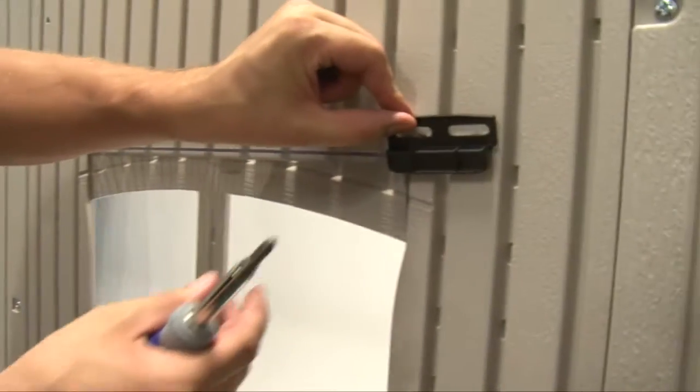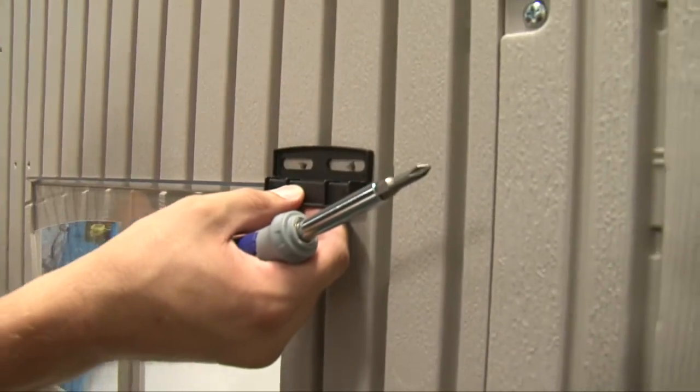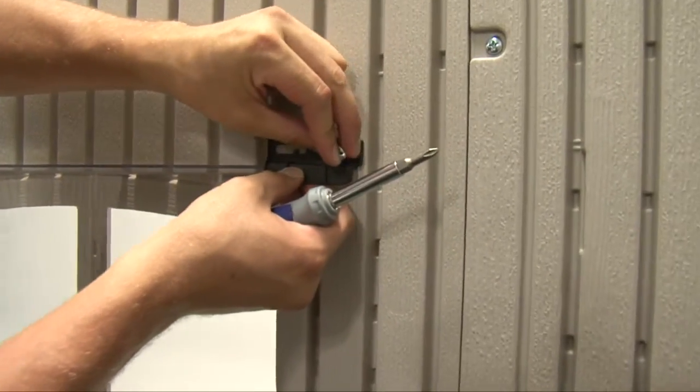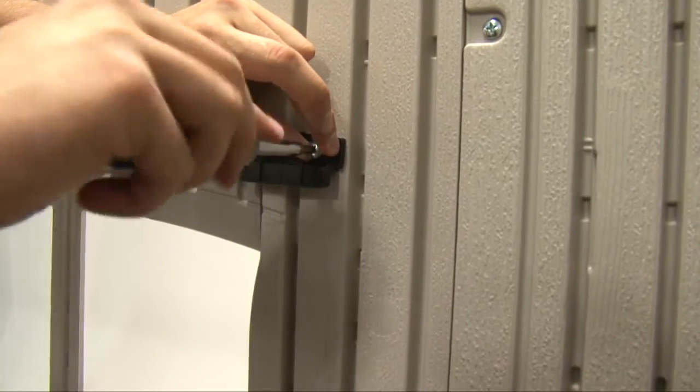At the top right corner of the window, align the holes in a window latch with those in the wall panel and insert two screws to hold it in place.